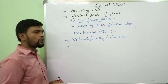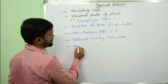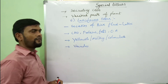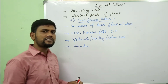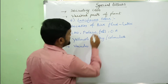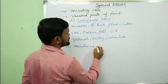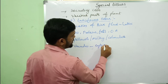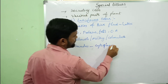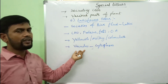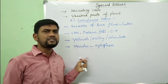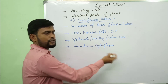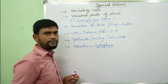Latex is stored in vacuoles. When the tonoplast is ruptured, this latex is released into the cytoplasm.